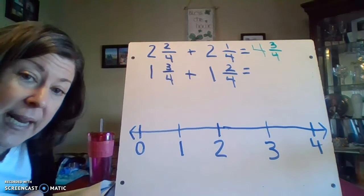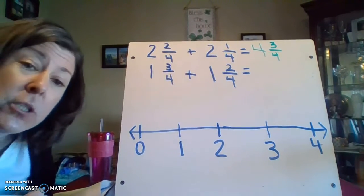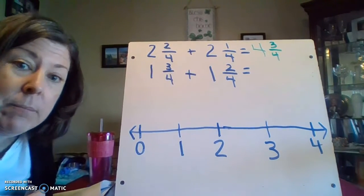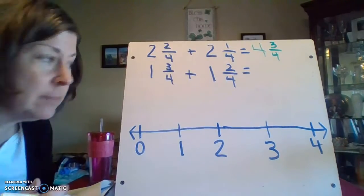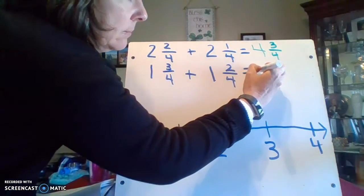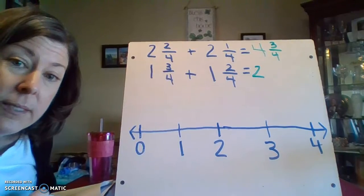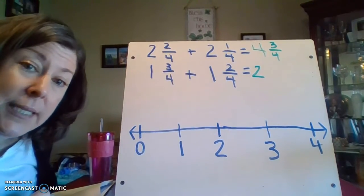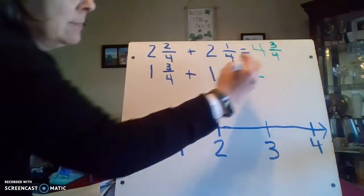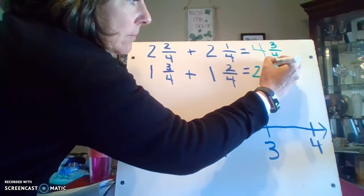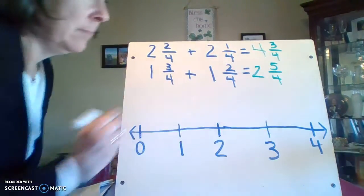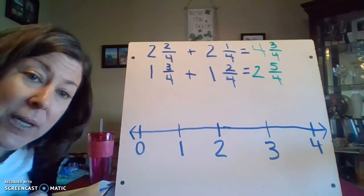Let's look at my second example. One and three-fourths plus one and two-fourths. First I'm going to add my ones. One plus one equals two. Three-fourths plus two-fourths equals five-fourths.